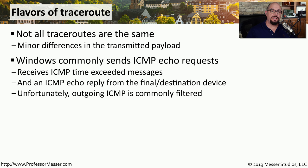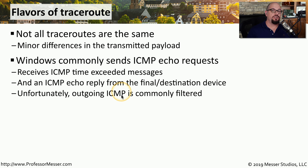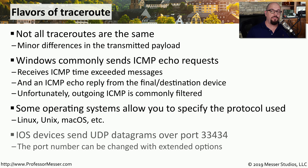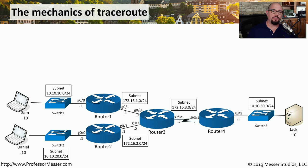When you use traceroute in Windows, you're sending an ICMP message outbound — very similar to sending a ping — and expecting ICMP time-to-live-exceeded messages in return. Once your packet finally reaches the destination, that device sends back an ICMP echo reply, the same reply you receive when you send a ping. Since ICMP is commonly filtered, there could be situations where traceroute in Windows isn't the best tool. In other operating systems like Linux, Unix, or Mac OS, you can change the outbound protocol to UDP or TCP. For example, iOS devices send the outbound message via UDP over port 33434, and many programs allow you to change those port numbers as well.